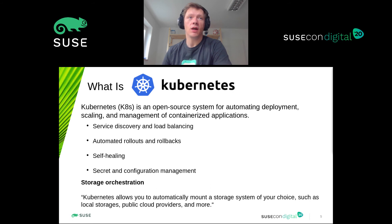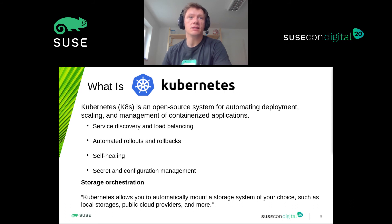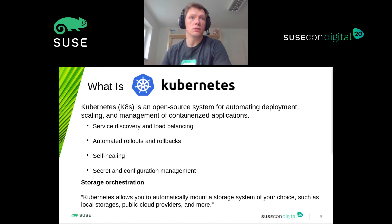Kubernetes is an open source system for automating deployment, scaling, and management of containerized applications. It has means of service discovery and load balancing, automated rollouts and in case of failure also automated rollbacks, and some kind of self-healing and secret configuration management. Kubernetes allows you to automatically mount a storage system of your choice, such as local storage, public cloud providers, and more. This is the point where Rook hooks in.